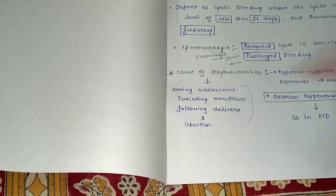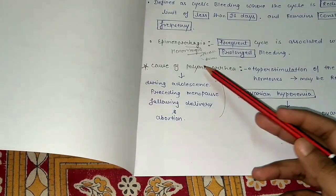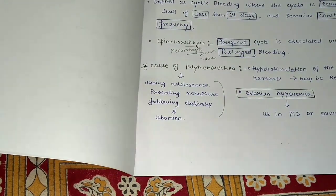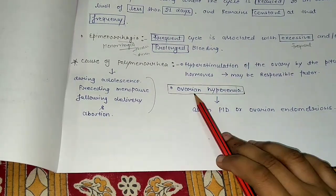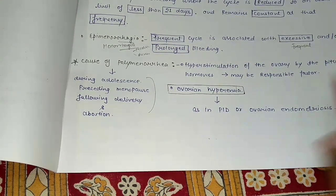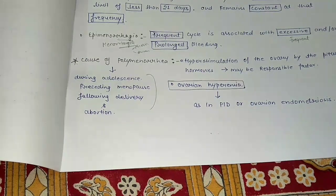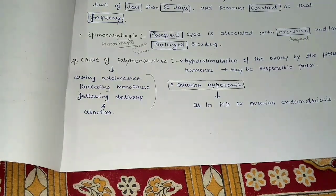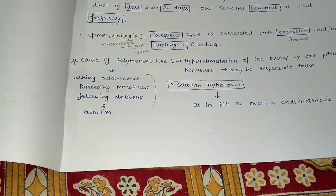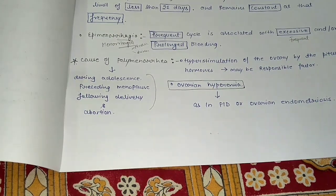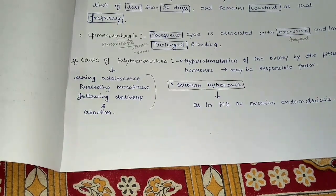Next is ovarian hyperemia, as in PID or ovarian endometriosis. When there is PID or ovarian endometriosis, we get to see polymenorrhea condition.